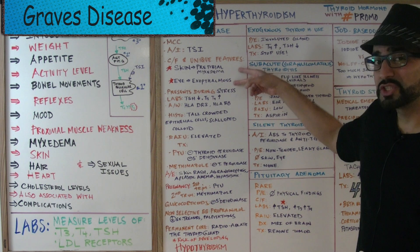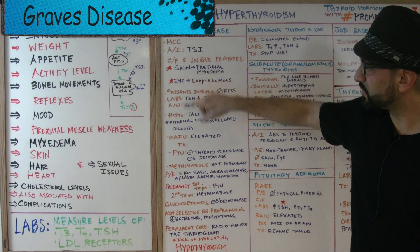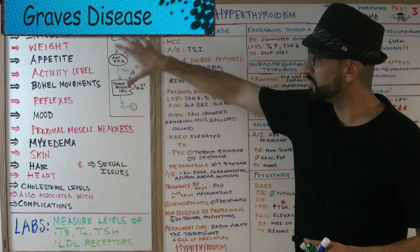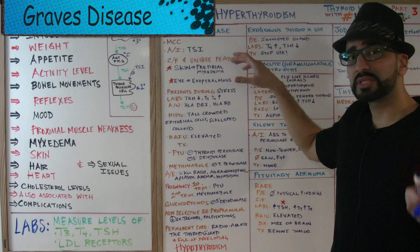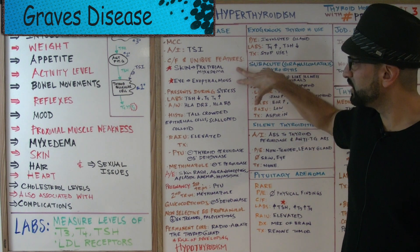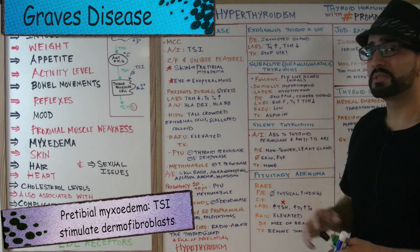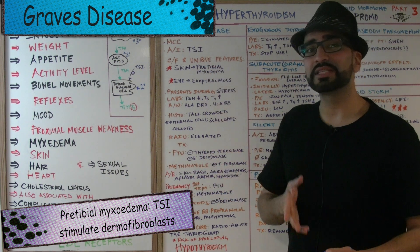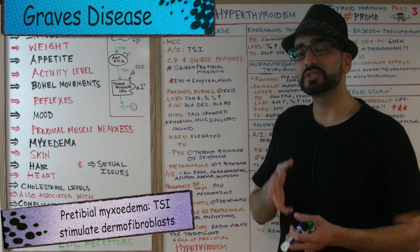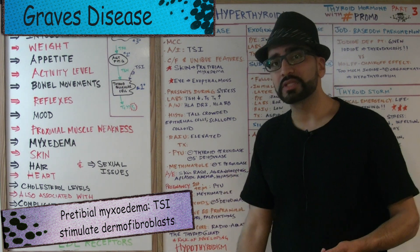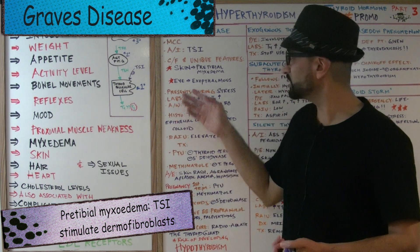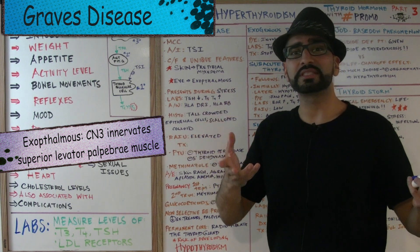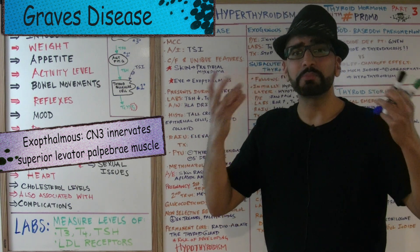Graves' disease has two unique features not seen in other causes of hyperthyroidism. The first is pretibial myxedema: the thyroid stimulating immunoglobulins stimulate dermal fibroblasts, leading to dermopathy of the skin. The skin just below the knee becomes very thick and red — that is pretibial myxedema.